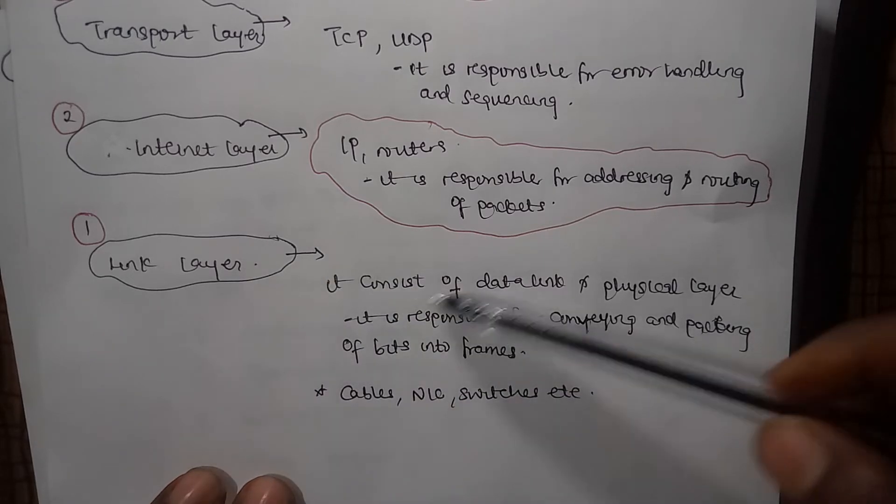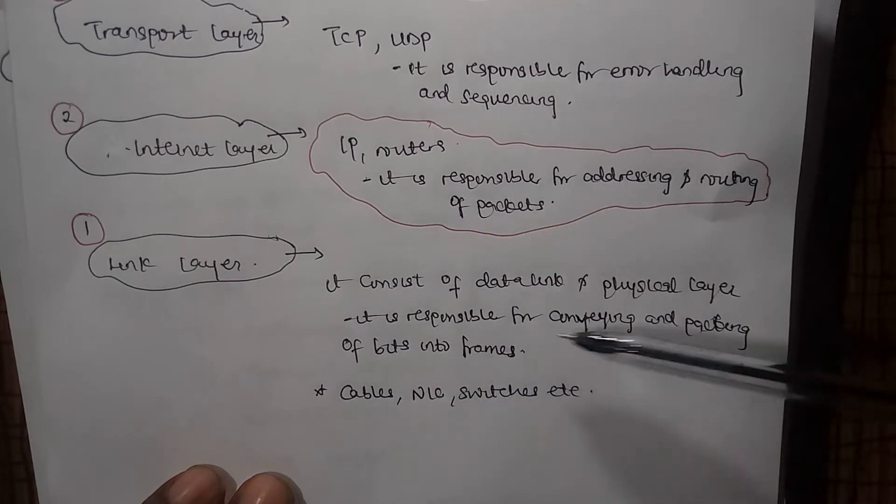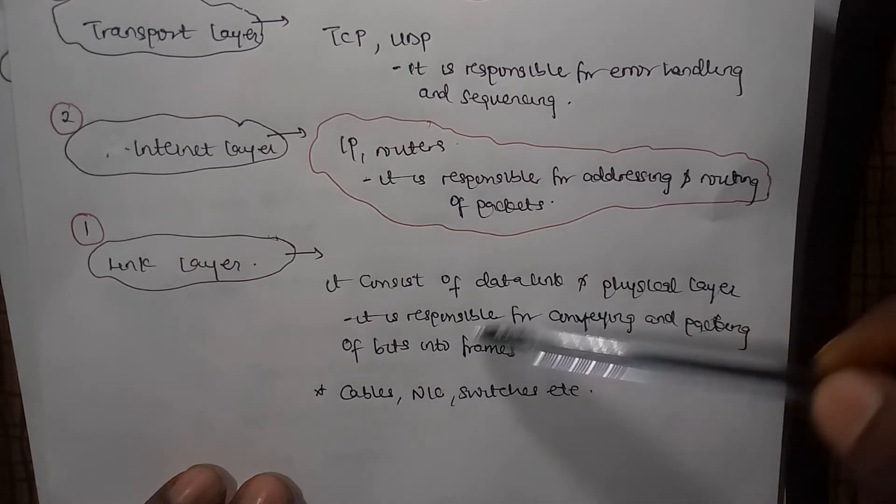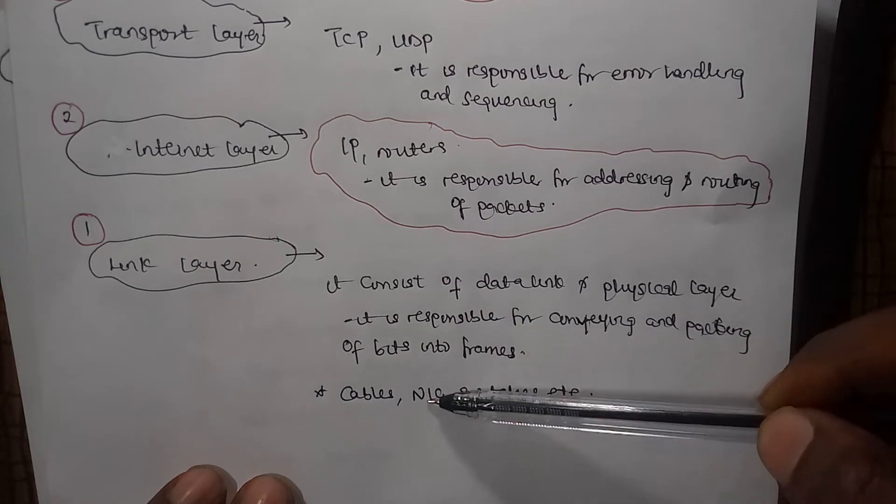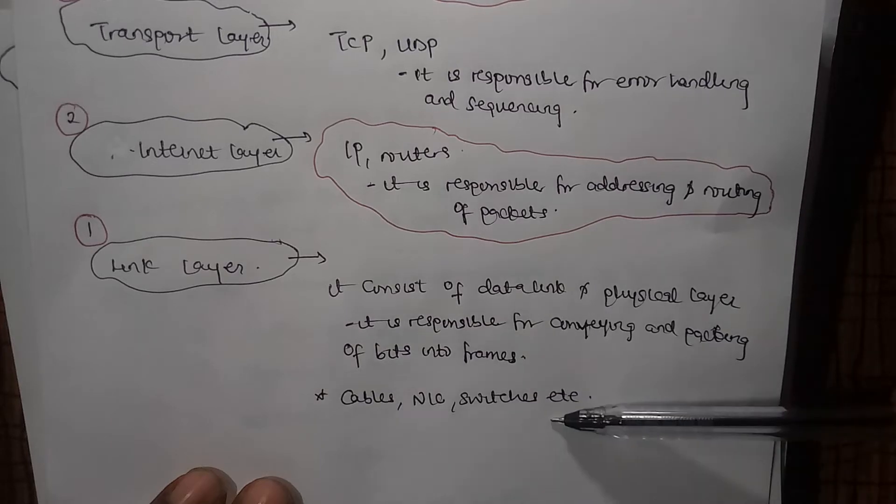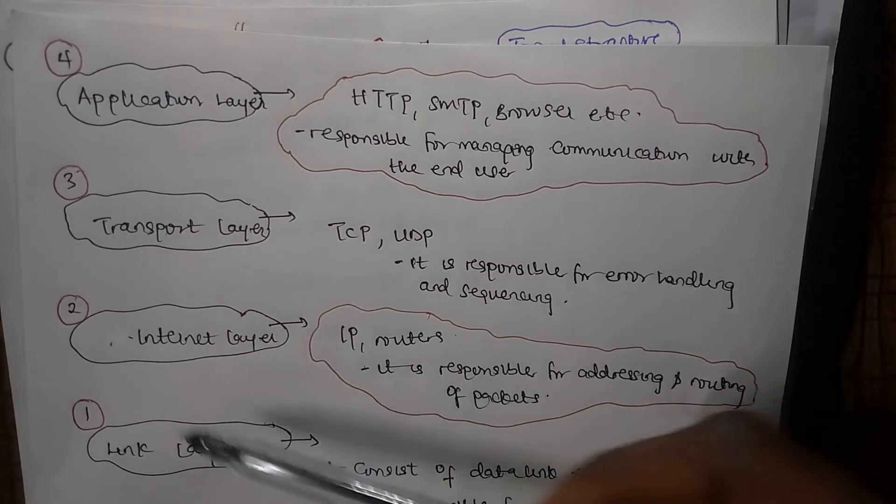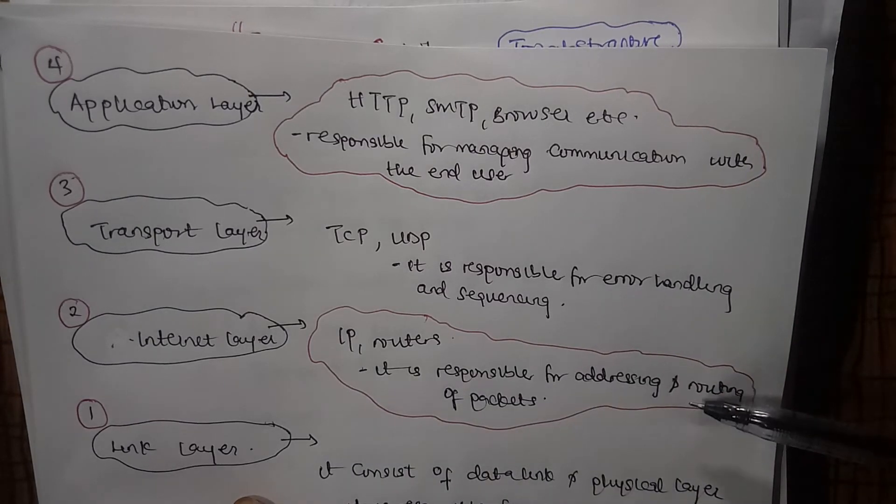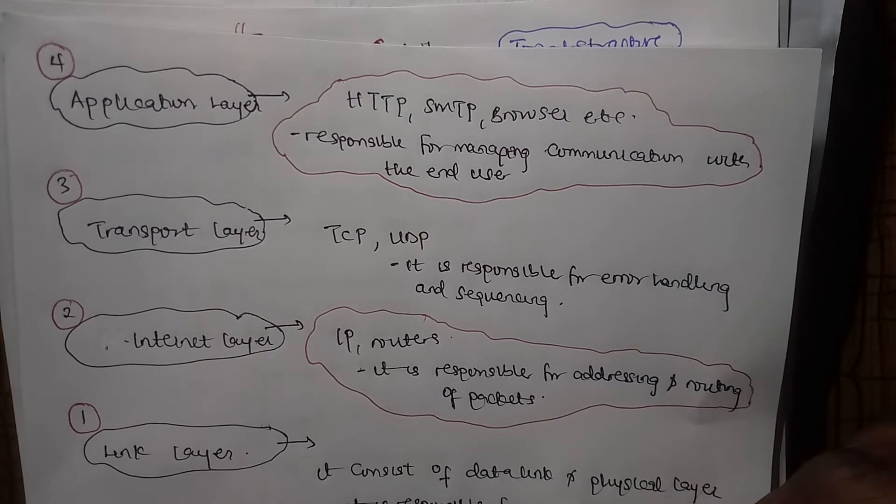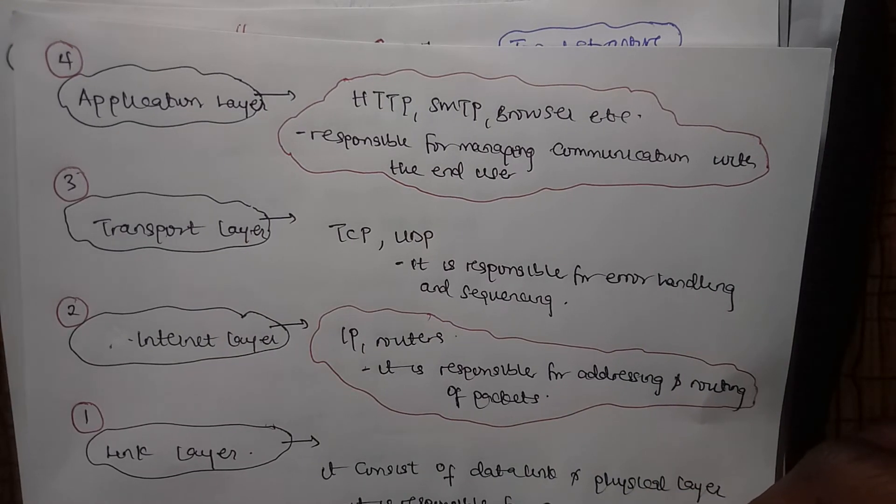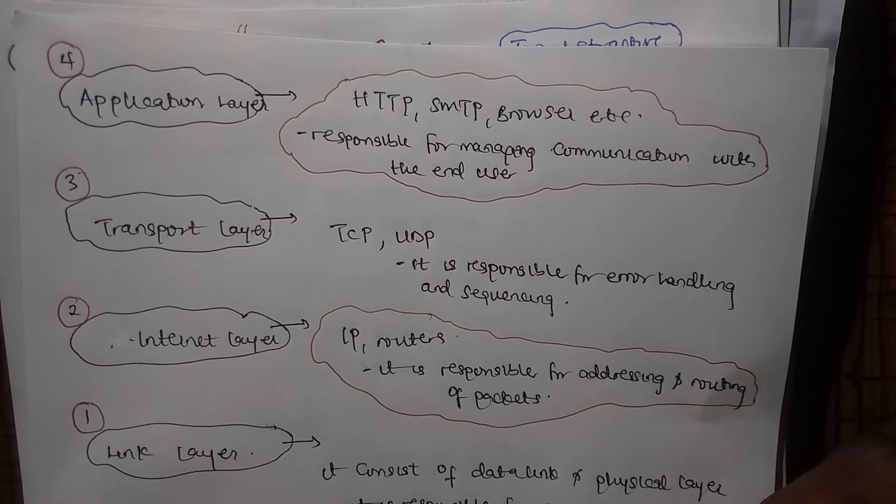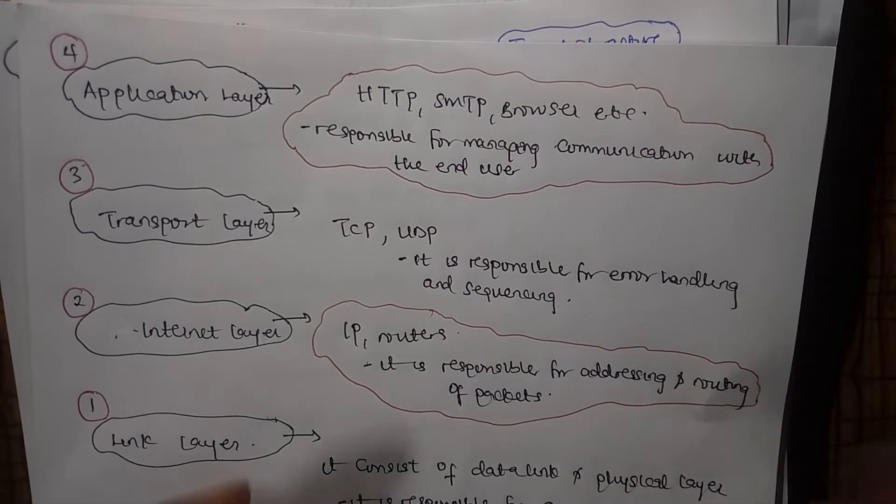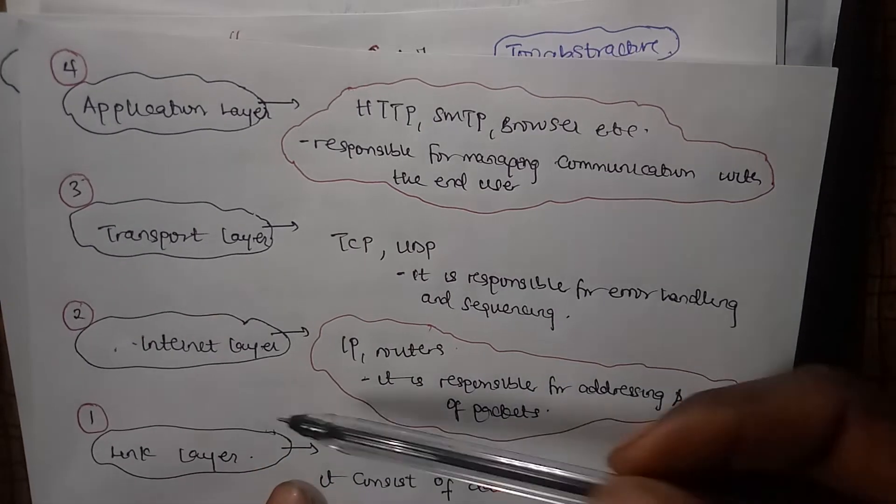Let's look at this from below. The link layer consists of the data link and physical layer. It's responsible for conveying and packaging bits into frames. Under this layer, we have devices and mediums like cabling, the NIC (network interface card), switches, etc. You can understand that better in the OSI model. Likewise, the internet layer consists of IP and the router. It's responsible for routing and addressing packets. Those zeros and ones in the physical layer and the devices we attach a MAC address to in the data link layer, which all reside in the link layer, pass through a router and are addressed by the internet layer.